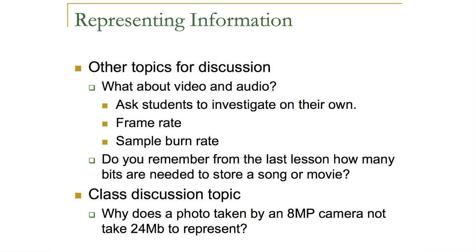Another class discussion topic is asking students to consider: if you had an eight megapixel camera, how many megabytes should it actually take to represent that image? Students should realize that with eight megapixels and three bytes per pixel, there should be roughly 24 megabytes. But actual photo files are usually only around four or five megabytes — unless in raw format. This discrepancy leads into a discussion of how we compress bits and the importance and purpose of compression as an algorithm.